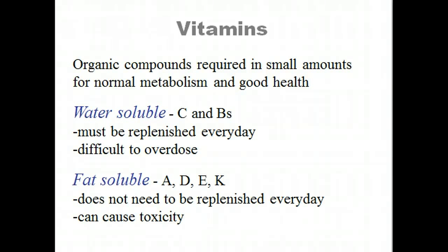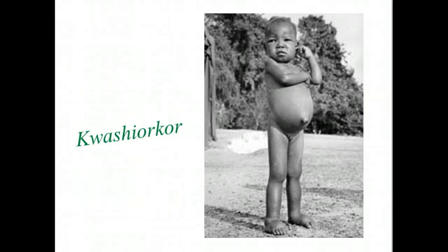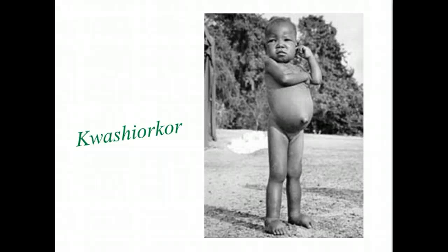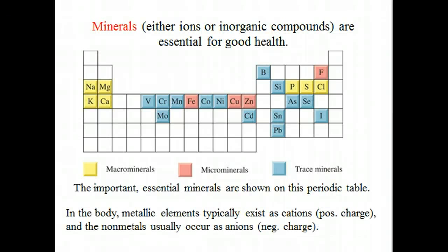Although vitamins are not a source of energy, they perform vital biological functions related to the regulation of metabolism. Some globally common diseases related to vitamin deficiencies are scurvy, beriberi, pellagra, rickets, and osteomalacia. Another nutritional deficiency is Kwashiorkor disease, which is caused by a protein deficiency and can occur when sufficient calories are available. In regions of famine, this is common in children between one and four years old because of premature weaning. Minerals are also very important for the proper function of metabolism, acting as co-factors. Many minerals and vitamins are available as food supplements, creating a $60 billion industry.